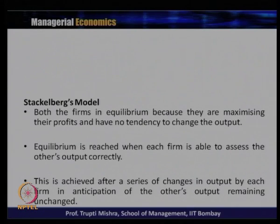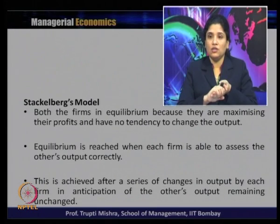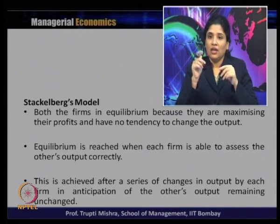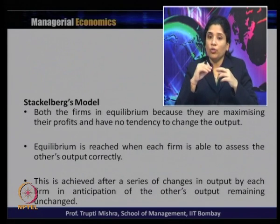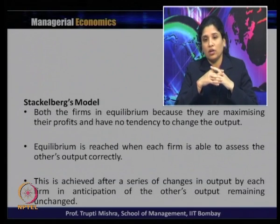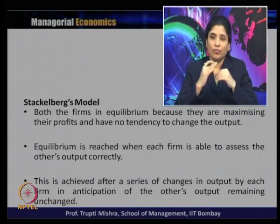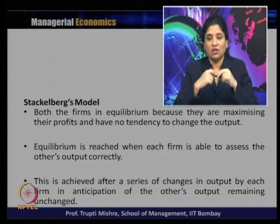The end outcome of the Stackelberg model is not fully determined. Equilibrium is reached when each firm can correctly assess the other's output, achieved after a series of output changes in the anticipation that the rival's output remains unchanged — similar to the Cournot action-reaction pattern.